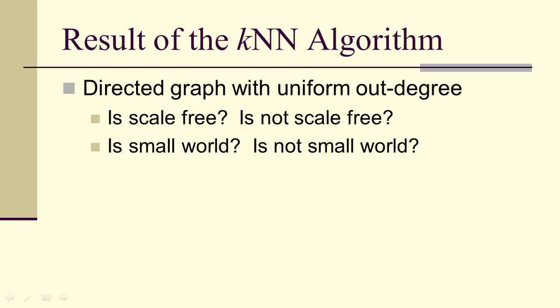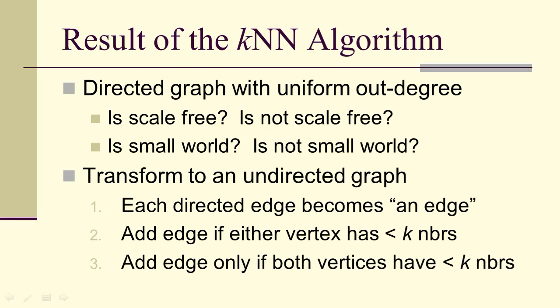What about the result of the K nearest neighbor's algorithm? When we first run the algorithm, we're going to end up with a directed graph with a uniform out degree. But can we say a directed graph is scale free or small world? It's hard to talk about these concepts with directed graphs, so we transform to an undirected graph.